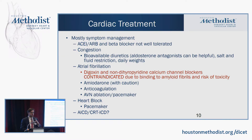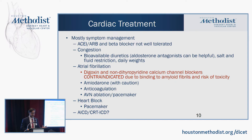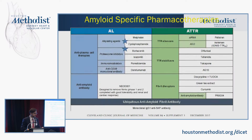For general treatment, ACE inhibitors and beta-blockers are not well tolerated. Using bioavailable diuretics such as torsemide or bumetanide is more helpful, as patients may have gut edema. Digoxin and both dihydropyridine and non-dihydropyridine calcium channel blockers are contraindicated due to binding of amyloid fibrils and risk of toxicity. Amiodarone should be used with caution, and the role of AICD is a separate discussion.